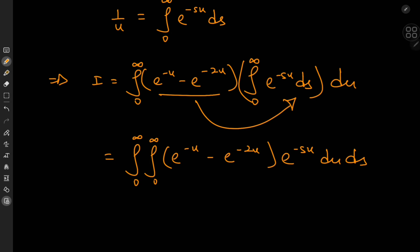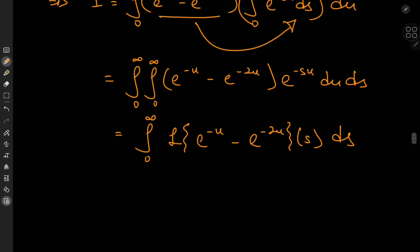This is pretty useful because that means I have a Laplace transform at hand. What I have here is the integral from 0 to infinity of the Laplace transform of e to the negative u minus e to the negative 2u, which we know is a function of the s parameter, and I have this integration with respect to s as well.